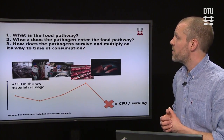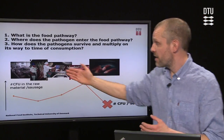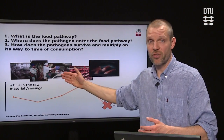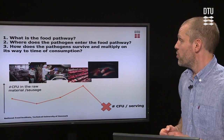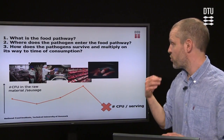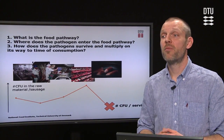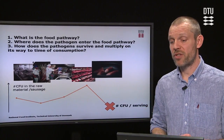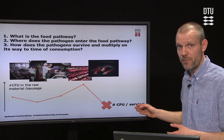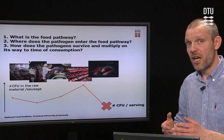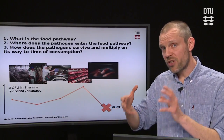You also need to ask yourself where does the pathogen enter the pathway. Does it enter with the food, in this case with the pigs, or does it enter during the production of the sausages? After you have identified the entering of the pathogen, you need to describe what is going on with the pathogen. Does it survive and multiply on its way to the time of consumption? And do we have processes in the production where we reduce the amount of pathogens in the product? The end result will be the number of CFUs per serving. The exposure is per serving — we don't accumulate pathogens in our body, so the dose is one go.